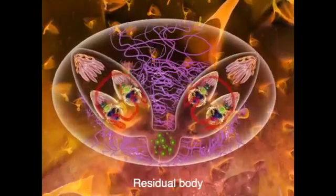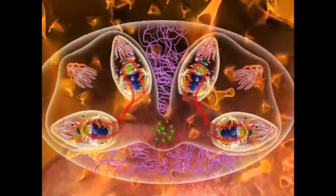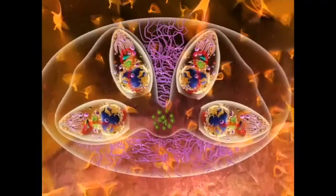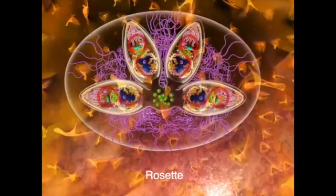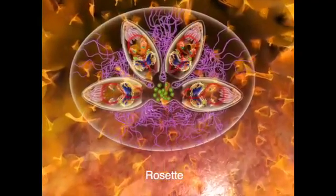The two daughter cells emerge, but remain linked to a residual body. After several endodiogenic cycles, the parasites are assembled as a rosette around the residual body. They progressively accumulate acidocalcisomes.